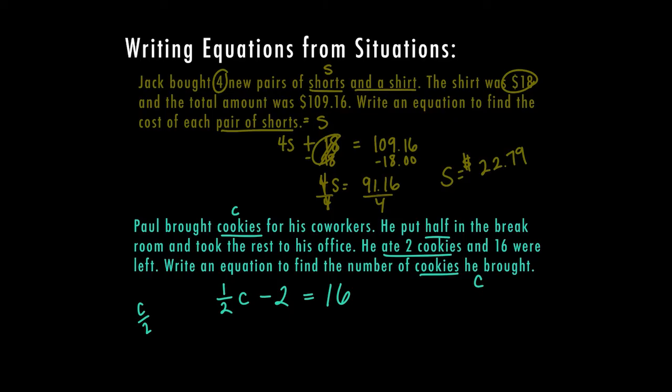So let's go ahead and solve. The first thing I want to do is add two to both sides because I want to get rid of this two by doing the inverse operation. And now 1/2 c equals